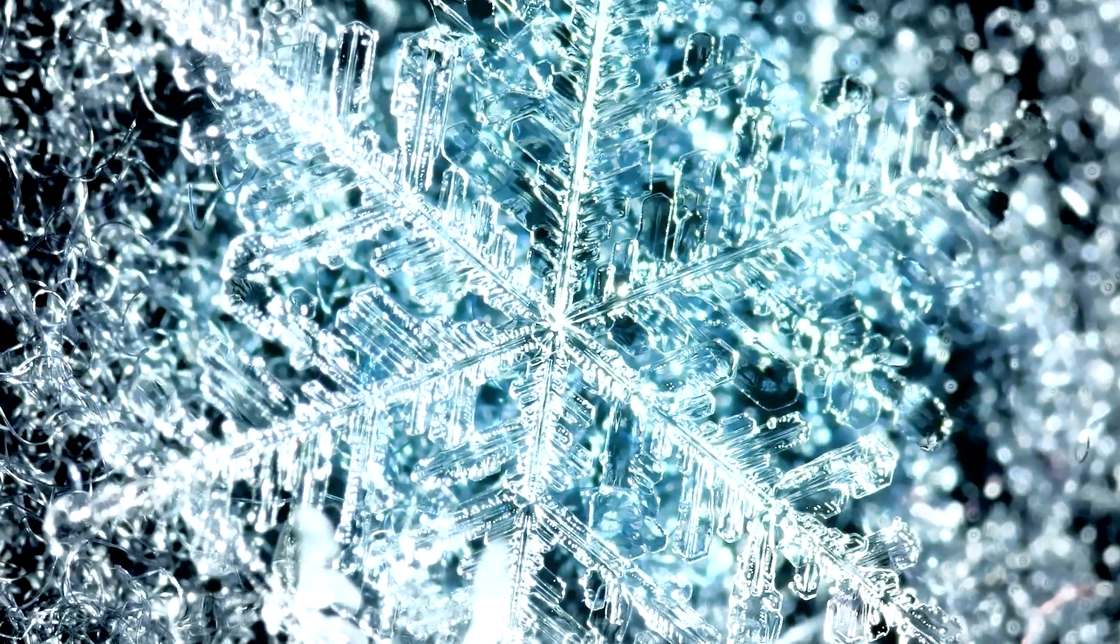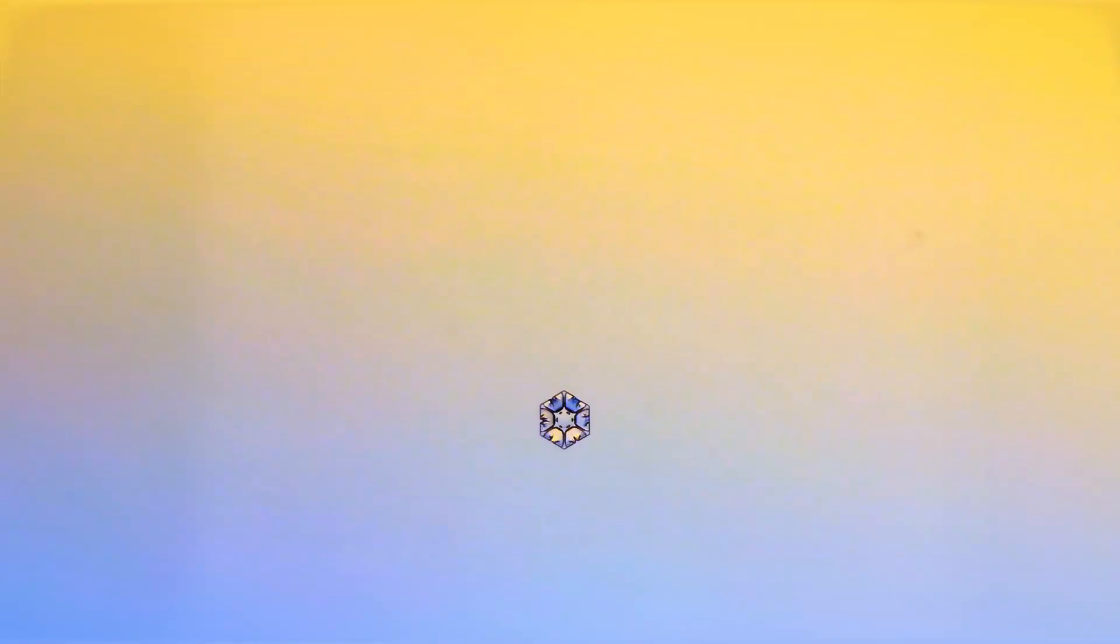Snowflakes are fascinating ice crystals that form in the atmosphere when water vapor condenses directly into ice. As more vapor condenses onto a nascent snow crystal, it grows and develops, and that is when its ornate patterns emerge. Here are some interesting facts about snowflakes.